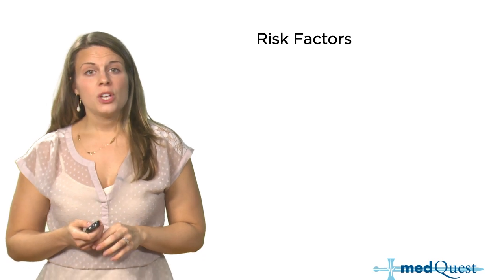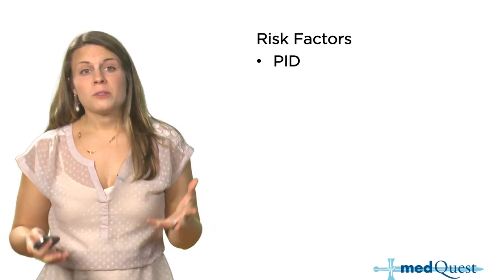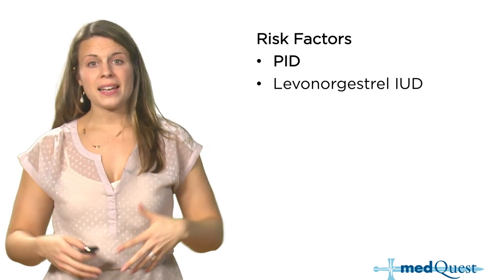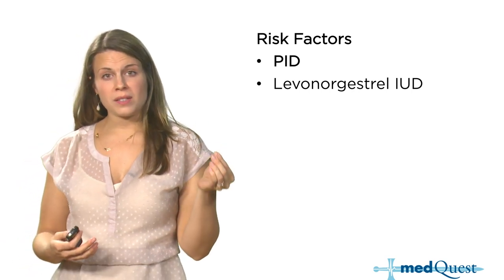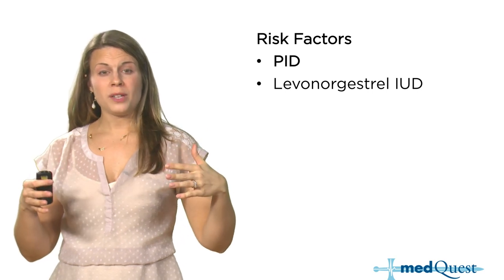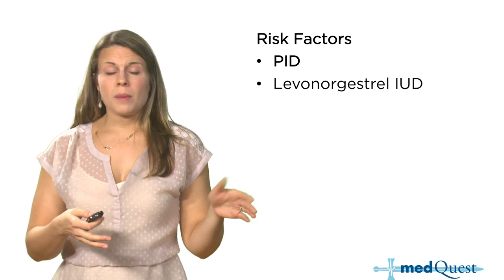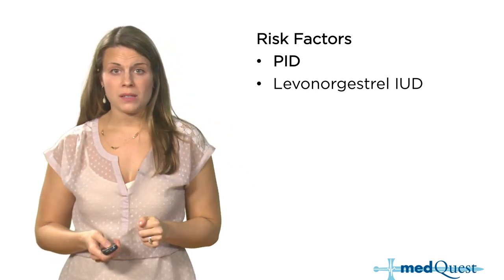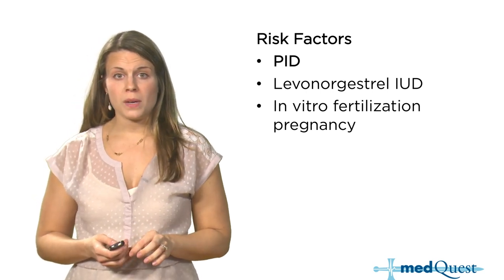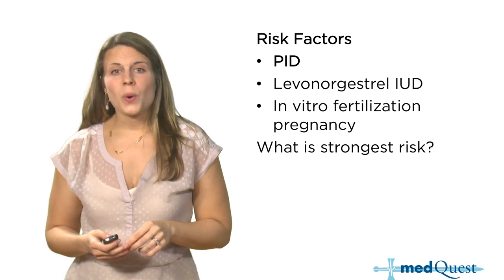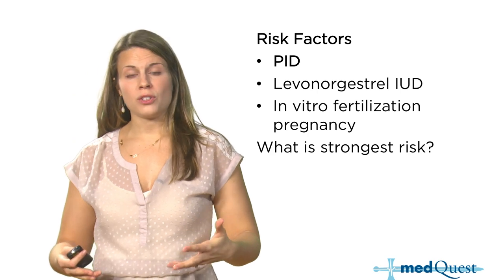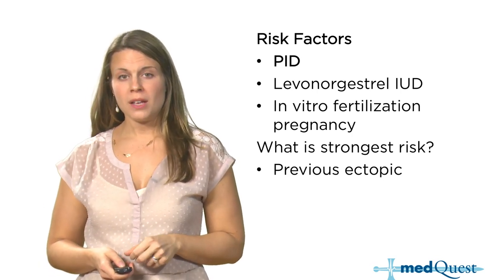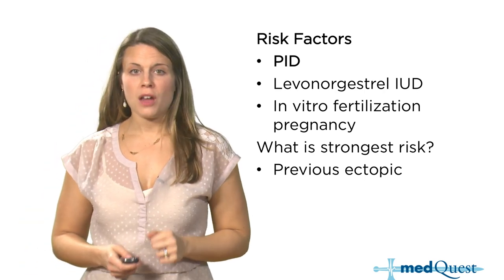Risk factors for ectopic pregnancy include gonorrhea and PID (pelvic inflammatory disease). The use of a levonorgestrel IUD is also a risk factor — not because the IUD itself causes an ectopic, but the progesterone slows down the ciliated cells in the fallopian tube that normally beat the pregnancy into the uterus. Patients who have had in vitro fertilization are at increased risk. The strongest risk factor — a common Step question — is a personal history of a previous ectopic pregnancy.